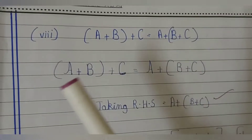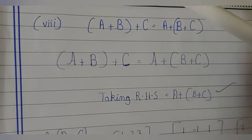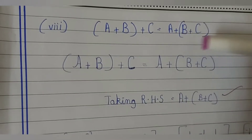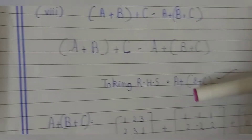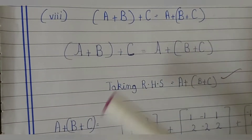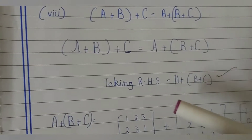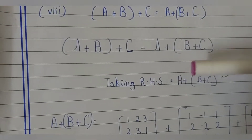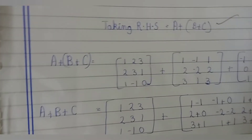Now part 8: (a plus b) plus c is equal to a plus (b plus c). First I will solve the right hand side, which is a plus (b plus c).